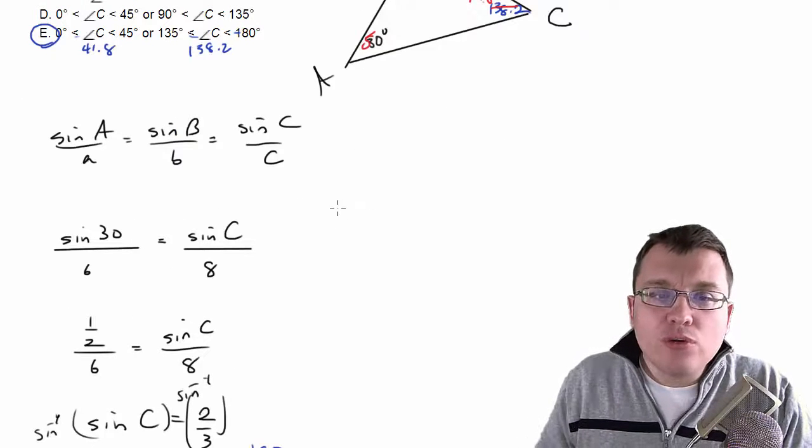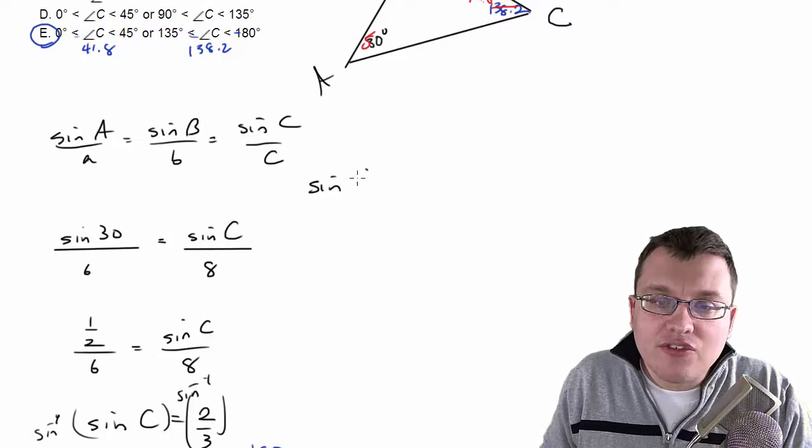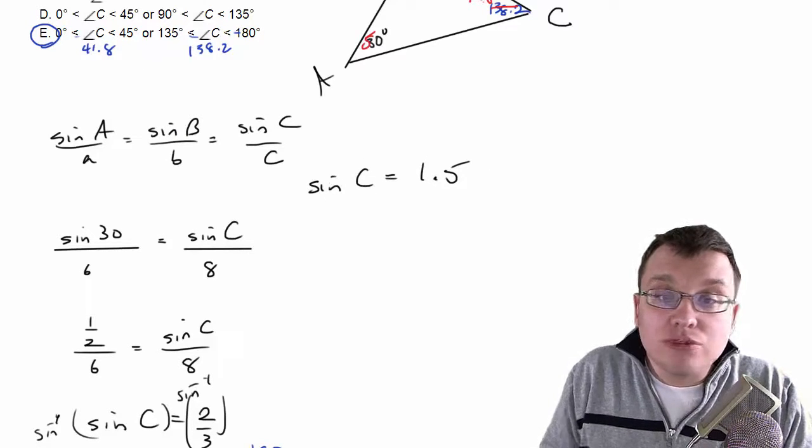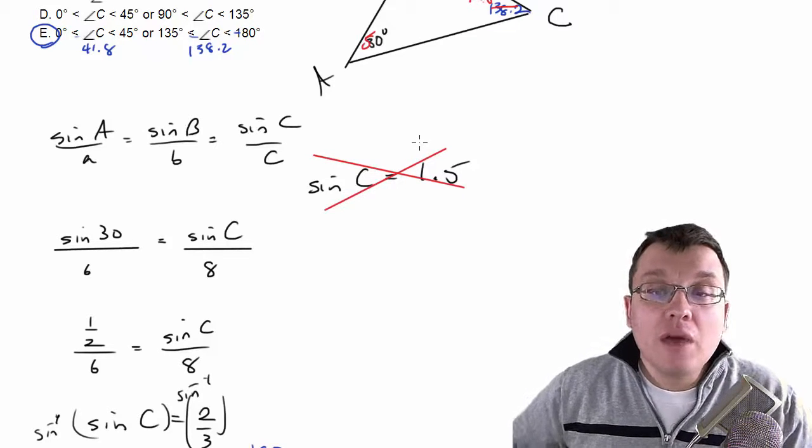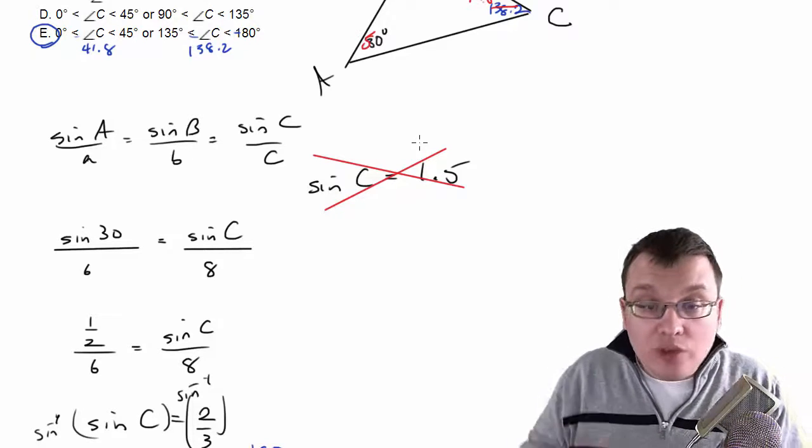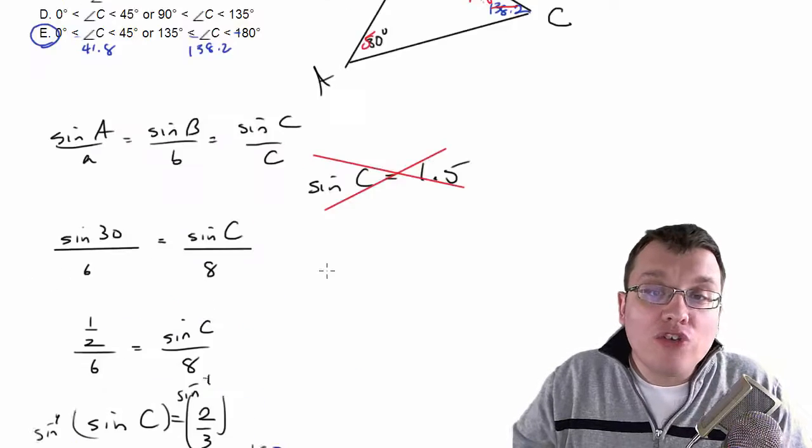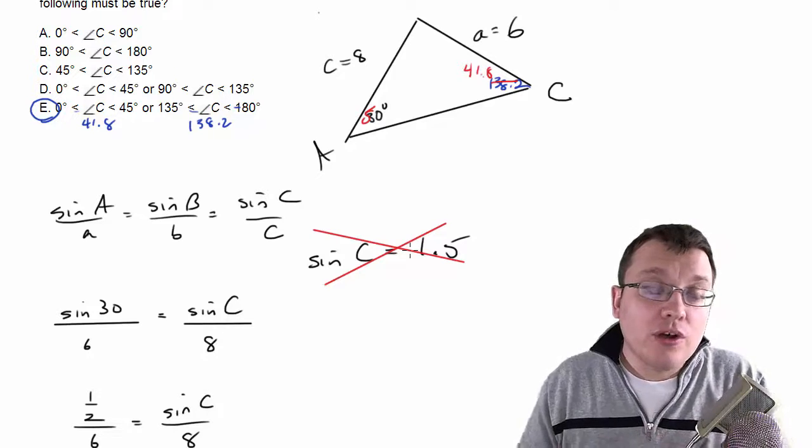One other note, if you get, let's say you're doing your law of sines, and you end up with something like this, sine of C equals 1.5. This will get you no answer. If you put this into your calculator, you'll get error undefined, because there is no angle that will give you a sine measure of 1.5, because sine only oscillates, as we see here, between 1 and negative 1. So in the case that you get this, that means there are no triangles that are possible.